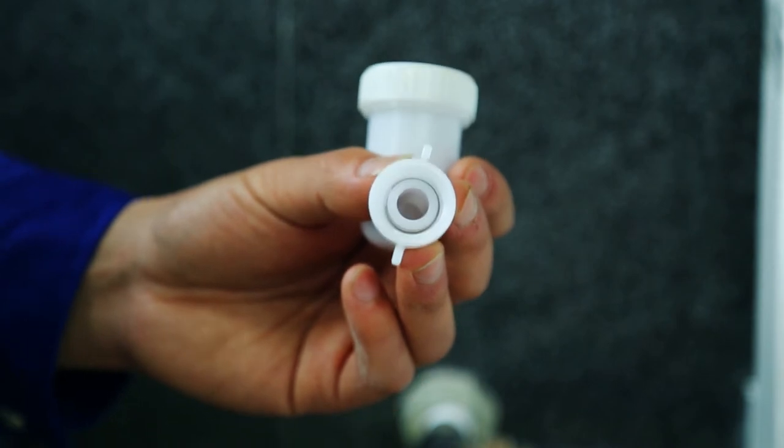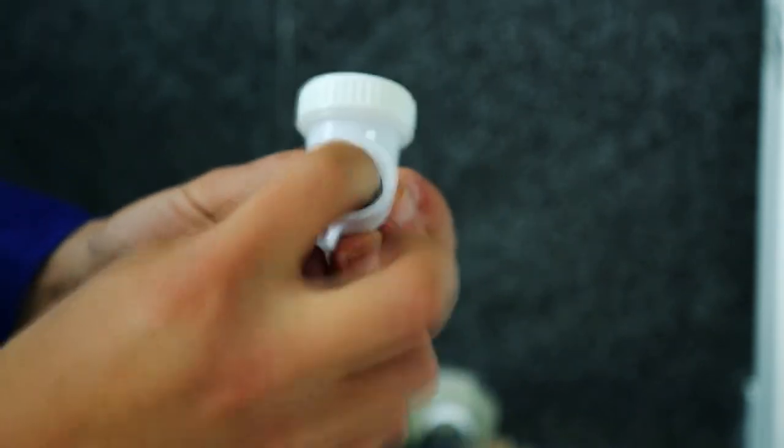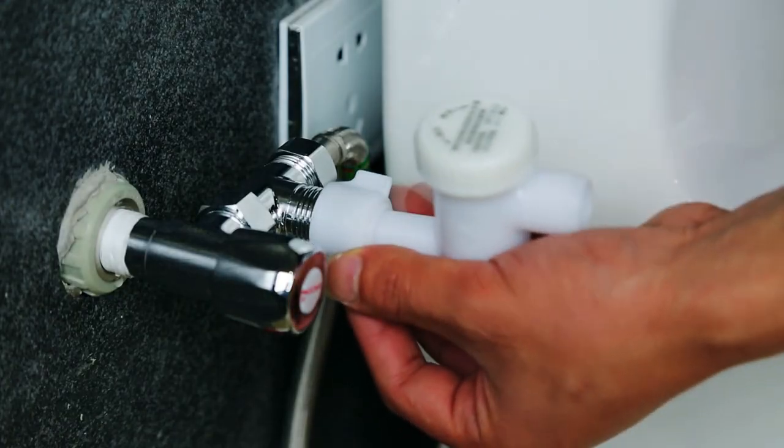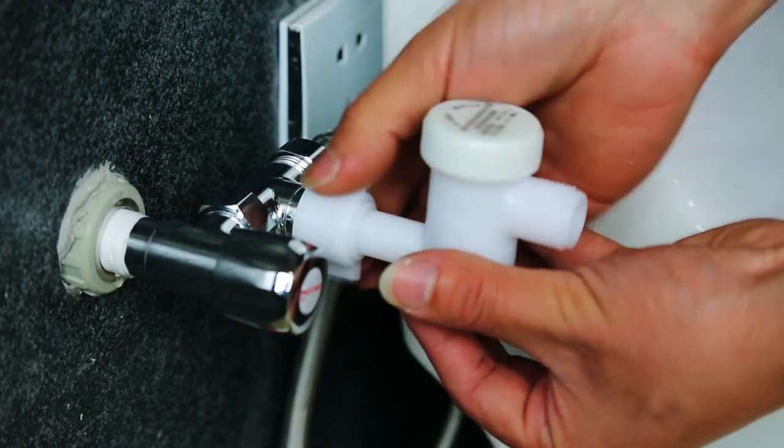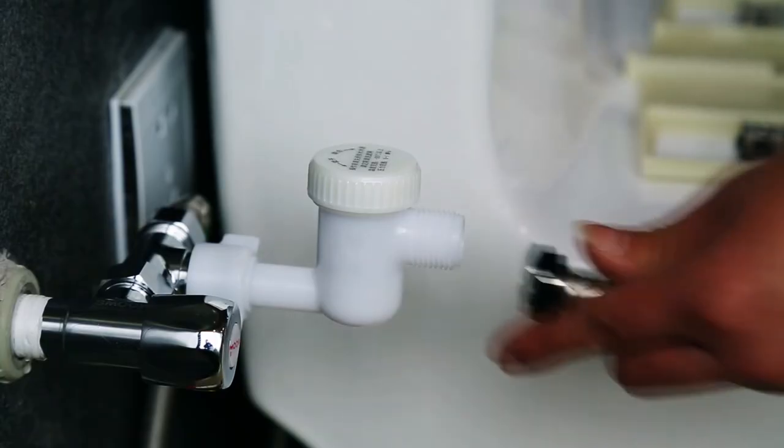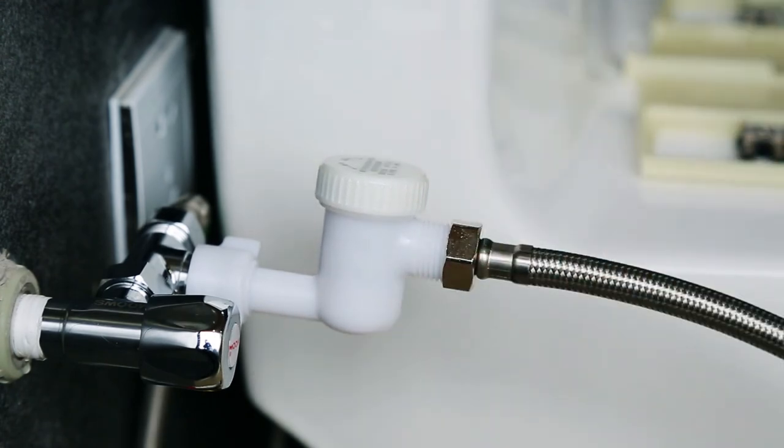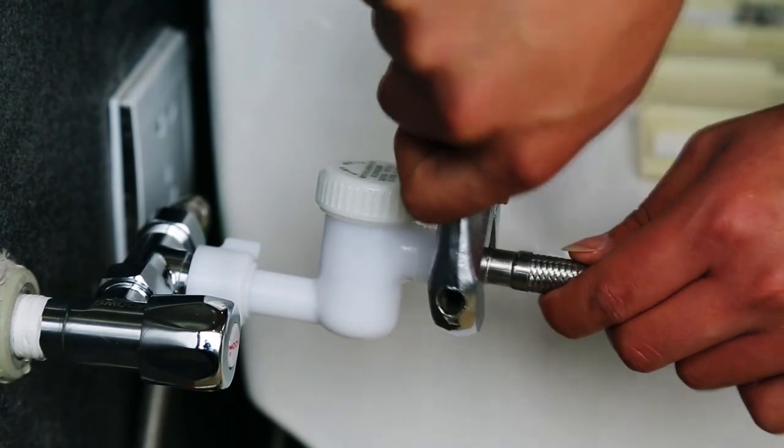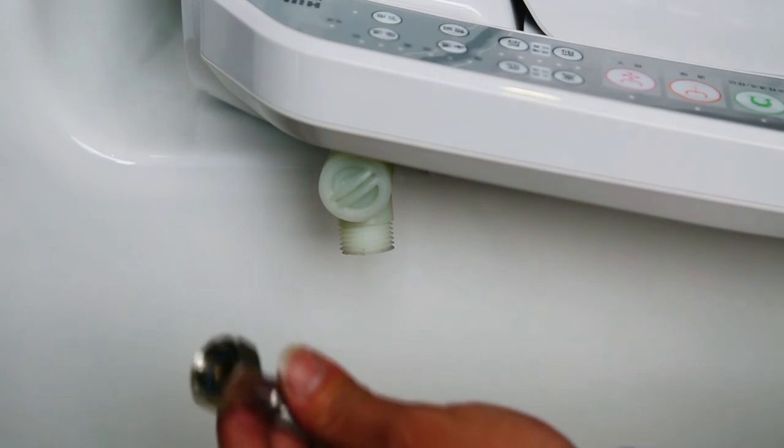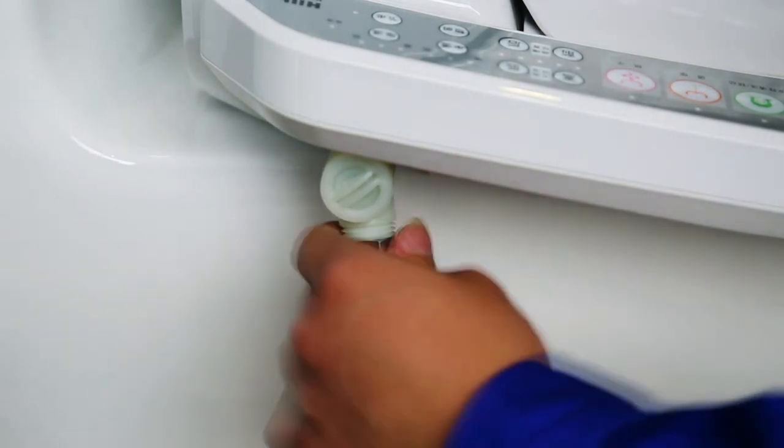Attach the water purifying filter. Insert gasket. Connect hose to the filter. Tighten it. Tighten and fix it firmly.